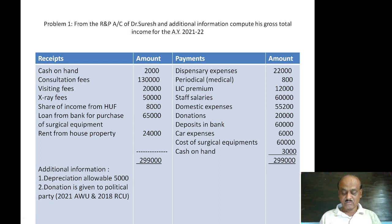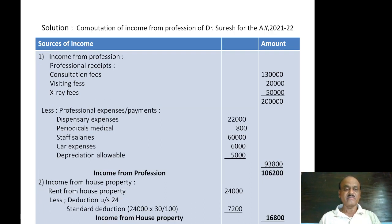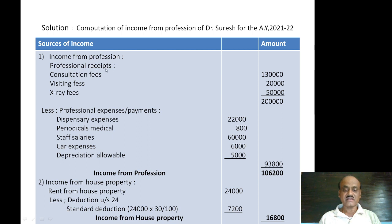Now we compute income from profession. Computation of income from profession of Dr. Suresh for the assessment year 2021-22. Professional receipts: consultation fee Rs. 1,30,000; visiting fee Rs. 20,000; x-ray fee Rs. 50,000 — total professional receipts Rs. 2,00,000.